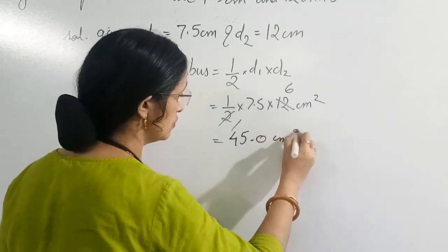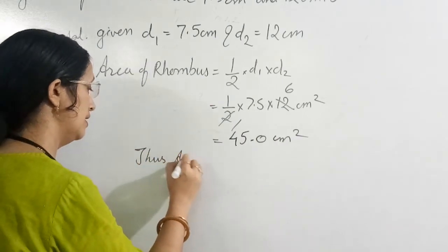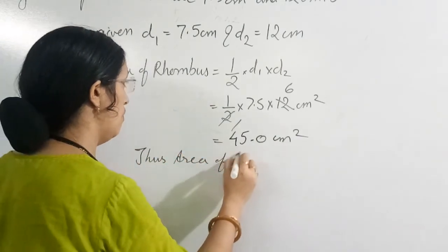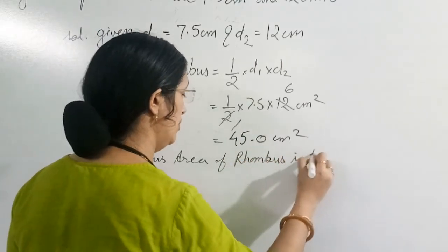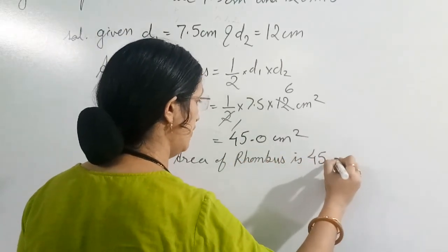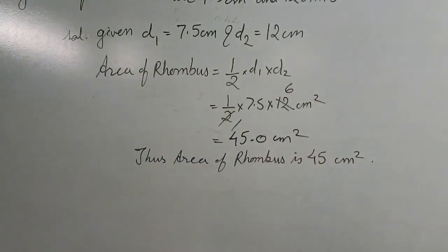Centimeter square. So you will write this area of rhombus is 45 centimeter square and this is the required answer.